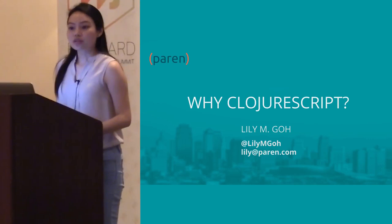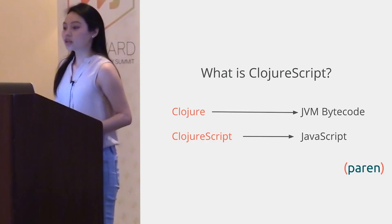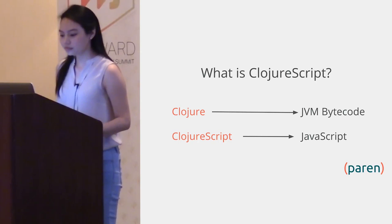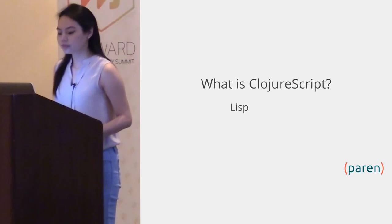First, let's start with what is ClojureScript. ClojureScript is a dialect of Clojure. Clojure compiles to JVM bytecode. ClojureScript compiles to JavaScript. ClojureScript is a Lisp. It is functional, and it is a dynamically typed compiled language.